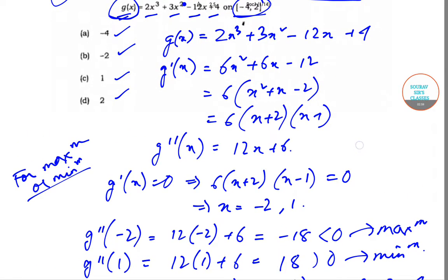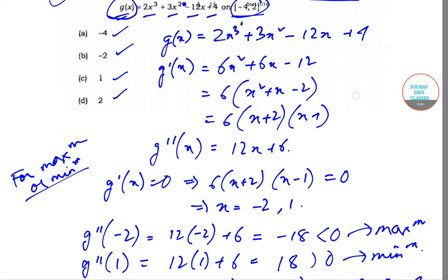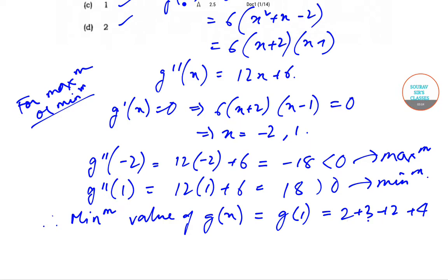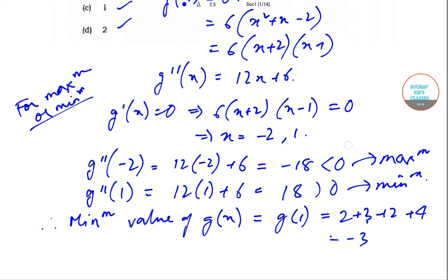Let me recalculate: 2 plus 3 is 5, 5 minus 12 is -7, -7 plus 4 is -3.